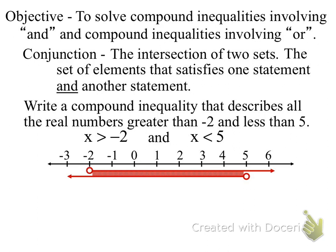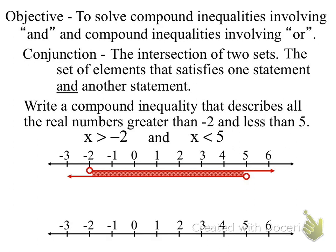There's an easier way to do this. When you see it written in words, we can write what's called an in-between statement. The minimum boundary is negative 2, the top boundary is 5, and we draw a line between them to show this is the area of intersection. This shows the lower boundary, the upper boundary, and your solutions are anywhere in between.